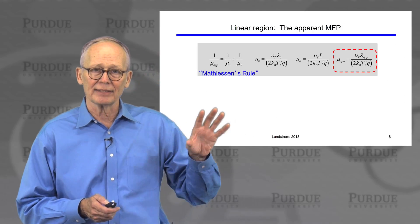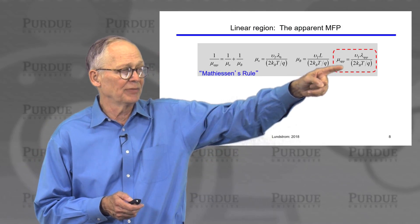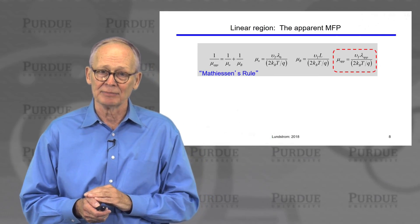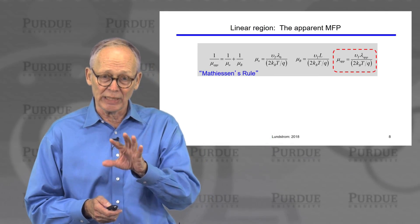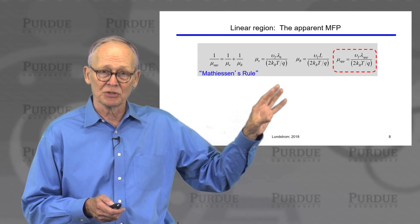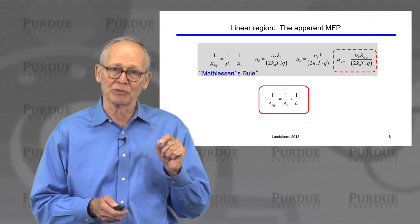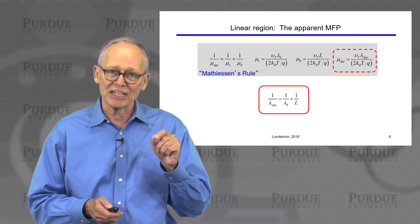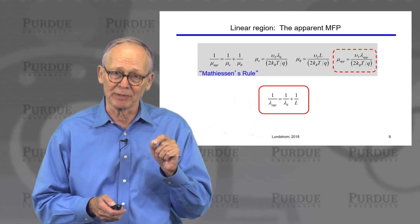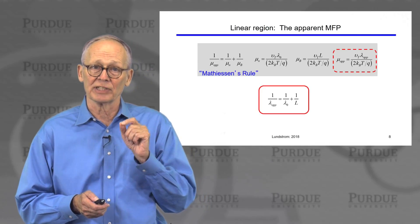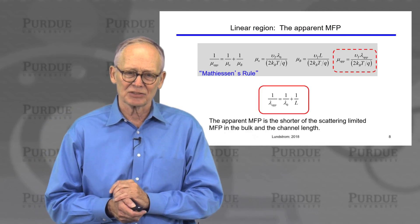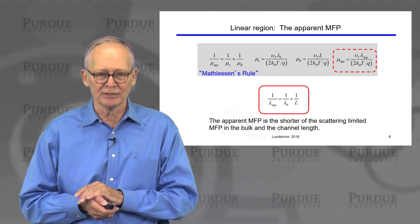Now, I could write the apparent mobility in terms of an apparent mean free path for backscattering. If you were to equate this definition to our other expressions, you would find that one over the apparent mean free path is one over the actual mean free path for backscattering in a bulk semiconductor, plus one over the channel length. So that's intuitive and easy to understand.